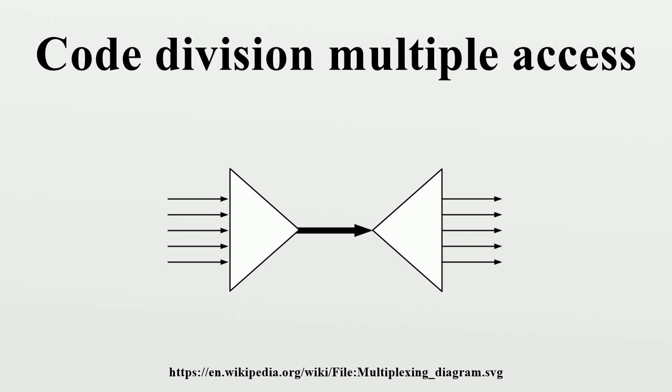Code Division Multiple Access is a channel access method used by various radio communication technologies. CDMA is an example of multiple access, where several transmitters can send information simultaneously over a single communication channel.